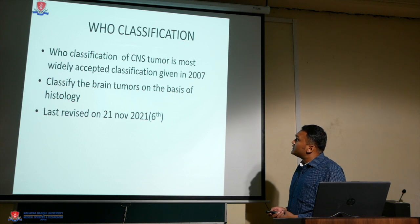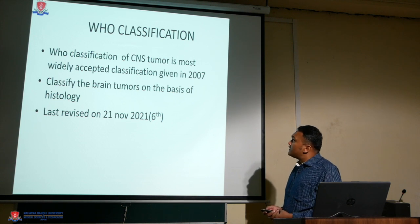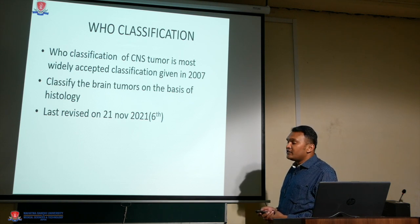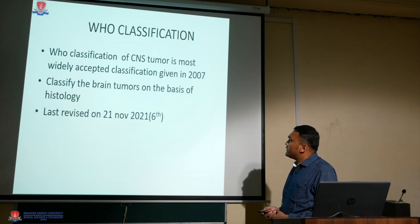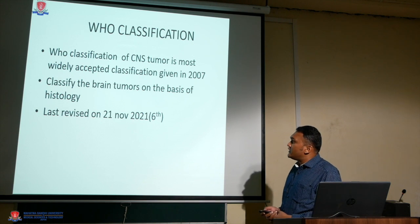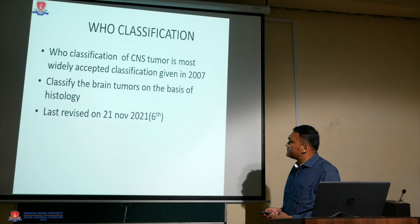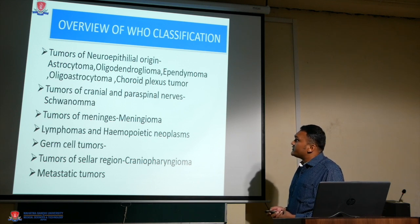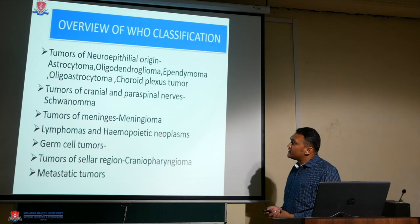Regarding the WHO classification of CNS tumors: the WHO classifies CNS tumors and this is the widely accepted classification, given in 2007. It classified brain tumors on the basis of histology and was last revised on 21st November 2021.